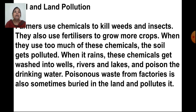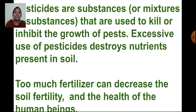The chemicals get into wells, rivers, and lakes and poison the drinking water. Poisonous waste from factories is sometimes buried in the land, which also pollutes it, as rainwater carries it into groundwater or water bodies. Pesticides — substances used to kill or inhibit the growth of pests — when used excessively, destroy the nutrients in the soil, decrease soil fertility, and affect human health.